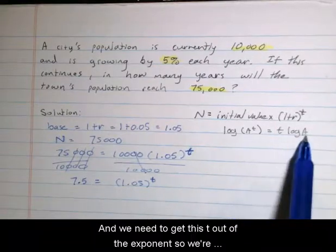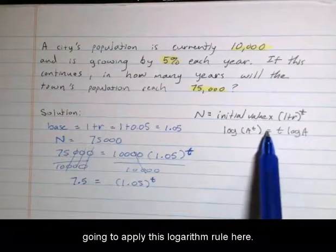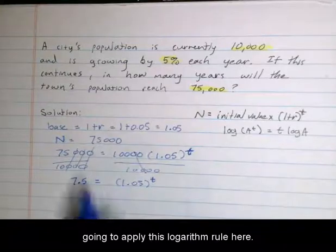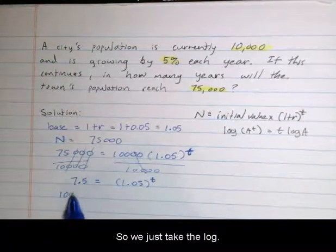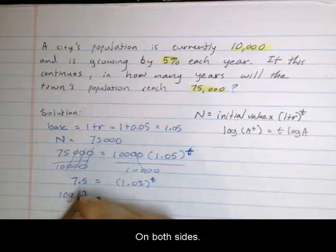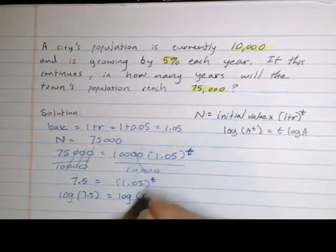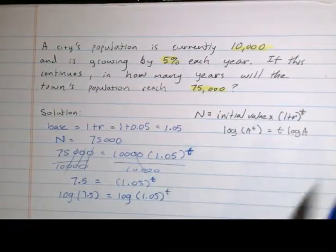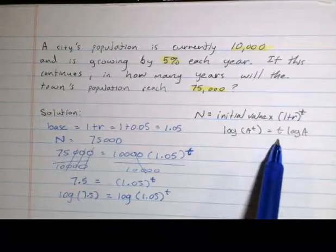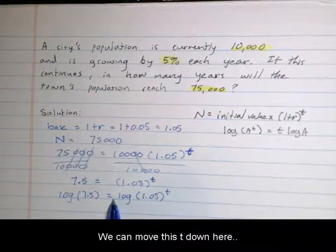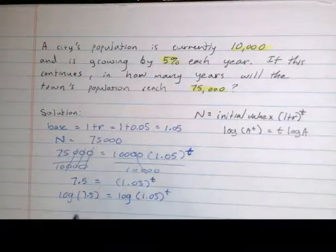We're going to apply this logarithm rule: log of a to the t equals t log of a. So we just take the log on both sides of the equation. Log of 7.5 equals log of 1.05 to the t. Then applying this rule, we can move this t down to the front.